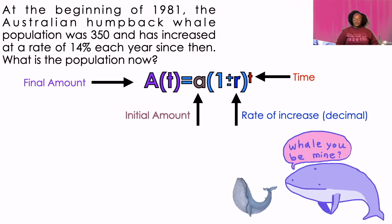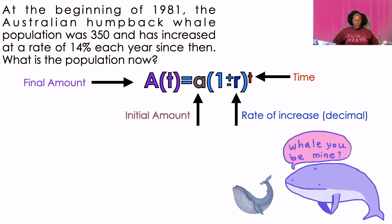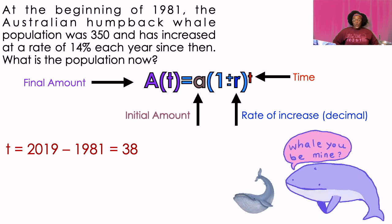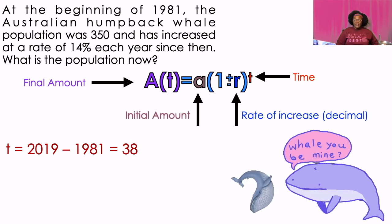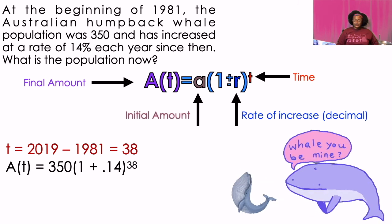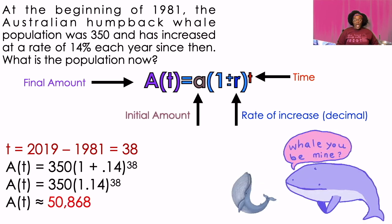At the beginning of 1981, the Australian humpback whale population was 350 and has decreased at a rate of 14% each year since then. What is the population of whales now? The first thing I'm going to tell you is that you need to figure out the amount of time because it didn't tell you. So we're going to use 2019 because this problem was from last year. So 2019 minus 1981, we're going to use 38 as our time. It's increasing at a rate of 14%. So I've changed 14 to a decimal, increasing using the plus sign. And that calculator voila, it's approximately 50,868.